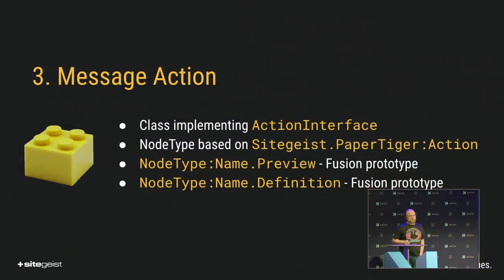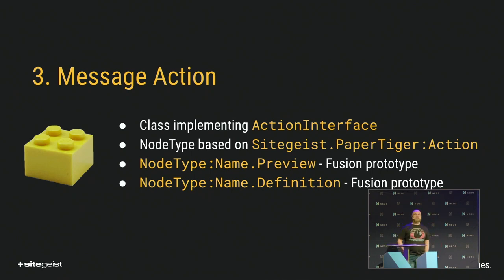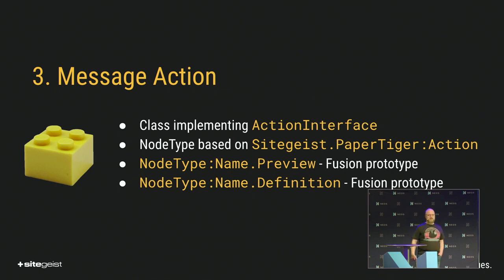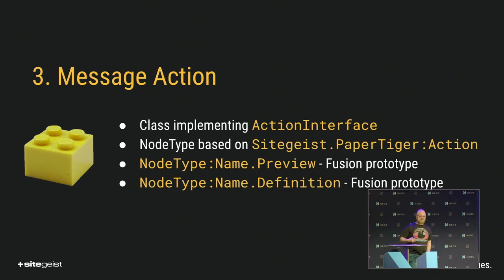The second thing you likely want to define is a custom action. To do that, you create a class which implements the action interface. The action interface is pretty simple — it has a single method which is called 'perform'. And if you extend it from the abstract action, you have options which may be applied to your action. To allow editors to create their own actions, you will create a node type based on SideGuys PaperTiger action. For that, you also have to define two Fusion prototypes. The first one being a preview prototype, which is for editors in the back-end to understand what this action will do. The second one is a definition, which configures the actual action implementation to do something.